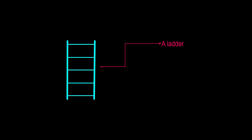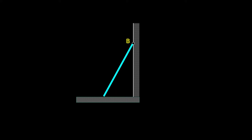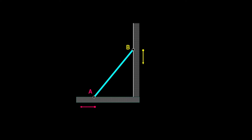Let's take this for example. Suppose we have a ladder resting on a wall. If we denote the point of contact between the ladder and the wall as point B, and the point of contact between the ladder and the floor as point A, just by looking at this figure, logic will tell you that when point A moves to the left, point B will move downward. Or conversely, when point B moves downward, point A will move to the left.